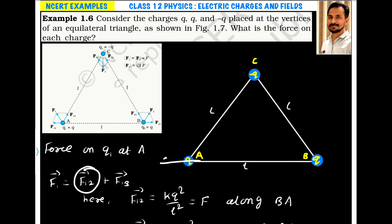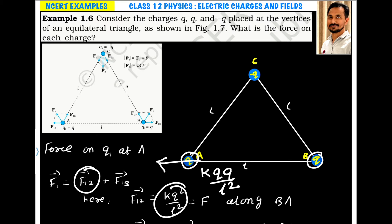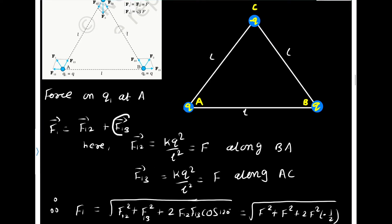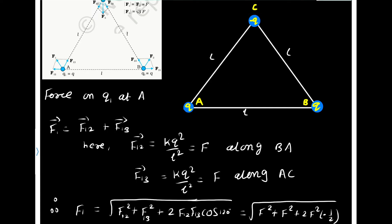F12 is given by KQ squared divided by L squared. Let us assume F12 equals F. F13 is along direction A to C, given by KQ squared divided by L squared — considering magnitudes only. So F13 is also equal to F, directed along A to C. The negative sign of the charge is used to determine the direction.